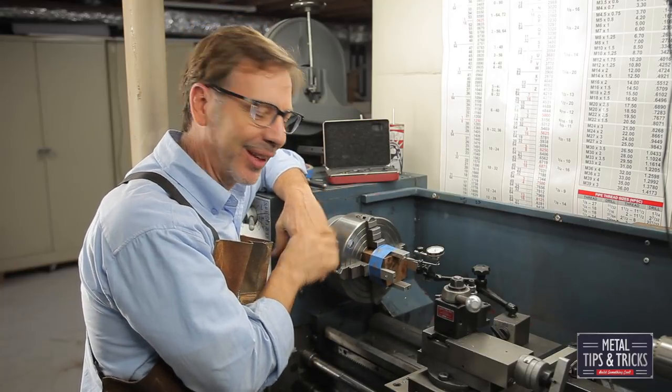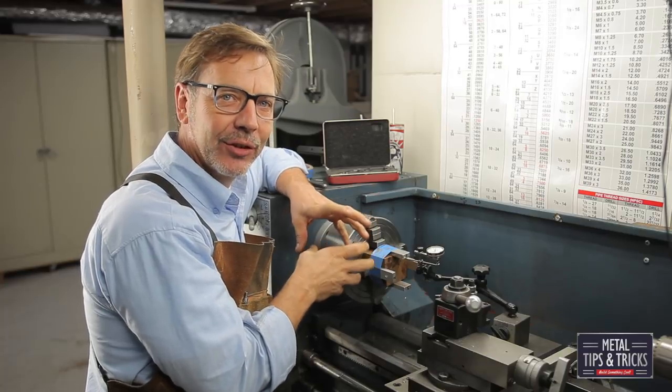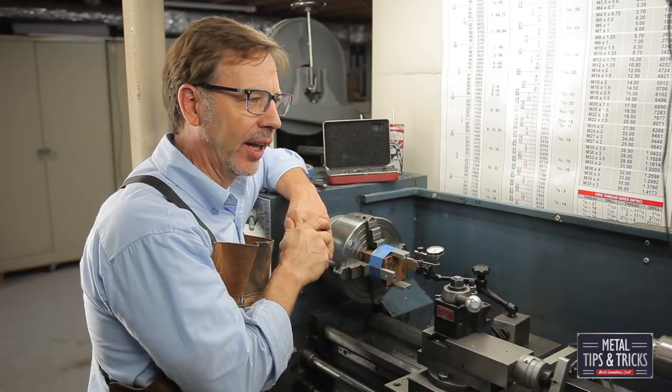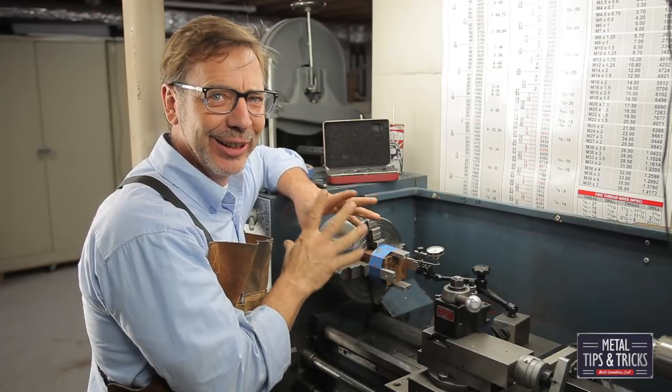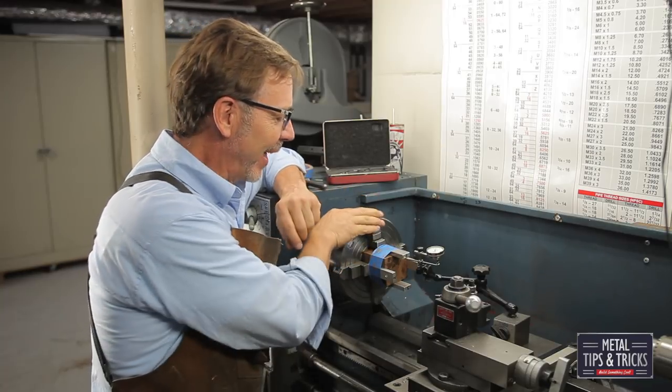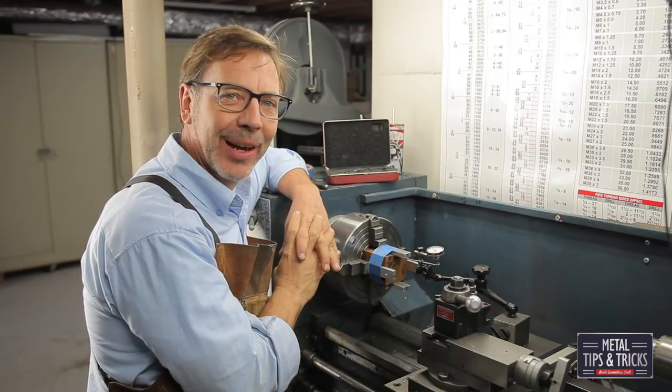It's that simple to line up a four-jaw chuck with square material. Now you're going to have to experiment, you're going to have to just test it, have some fun out there. You can go out there and practice. You actually don't have to have something to turn down. This project, I actually do have to turn something down and that will be in the next video.